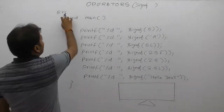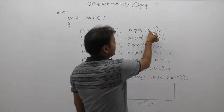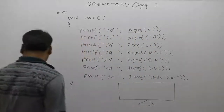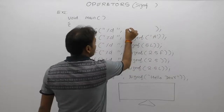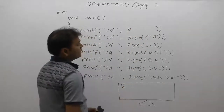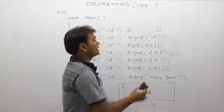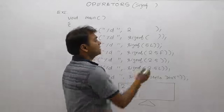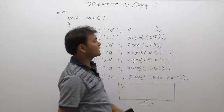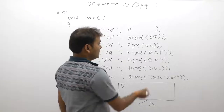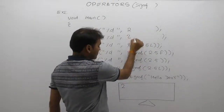The first example: sizeof(5). Since 5 is an integer, it returns the size of an integer type. An integer always takes two bytes, so it returns 2. In the next case, sizeof('a') — 'a' is a character representing ASCII value 65. Therefore sizeof('a') is equivalent to sizeof(65), which is an integer, so the size is two bytes and 2 is printed.